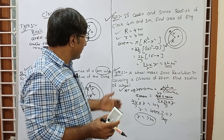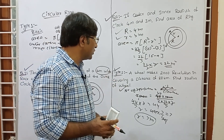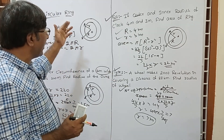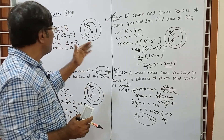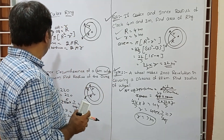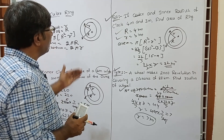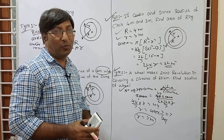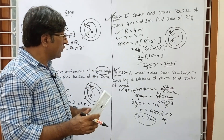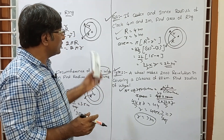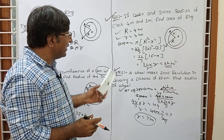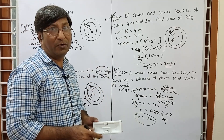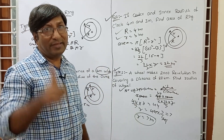So in this way we have solved the circular ring — two types of questions: basic question type 1 and type 2. You can solve these questions very easily using these important formulas. Thank you.